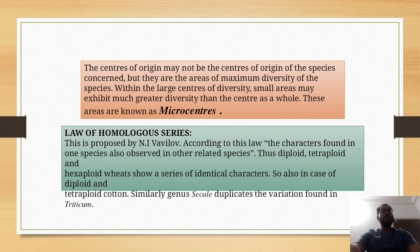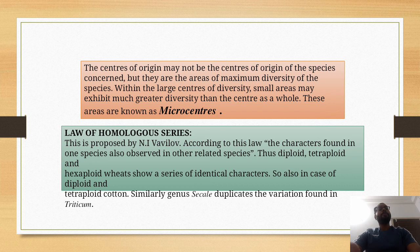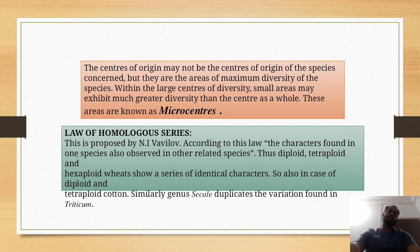Within the center of origin, genetic diversity is found more than in the remaining area. Within a center of origin, there are small areas where the highest genetic diversity is found — higher than the remaining area of that center. There are different varieties of wild species and related species concentrated in these micro areas. These small areas are called microcenters.